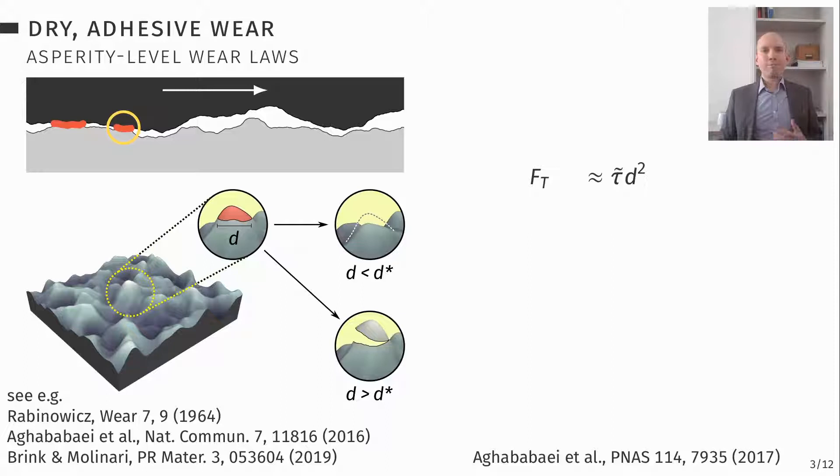So how can we get to a wear law? We can try something like Bowden and Tabor's model for friction of metals. Here we say for a single contact, the tangential force at this contact is going to be the shear strength of the contact tau times the area of this contact, approximated here just as d squared. Then you can get from friction to work by integrating over a sliding distance.